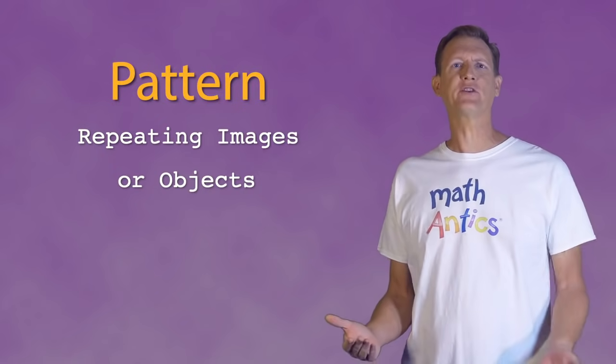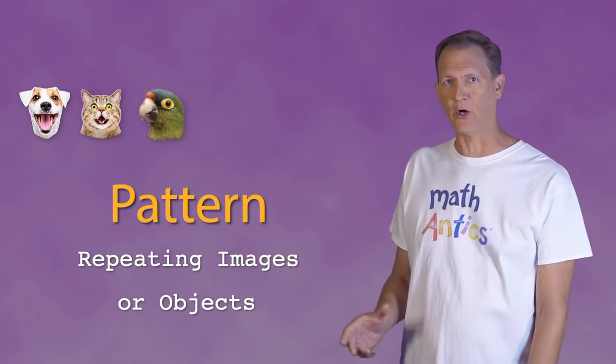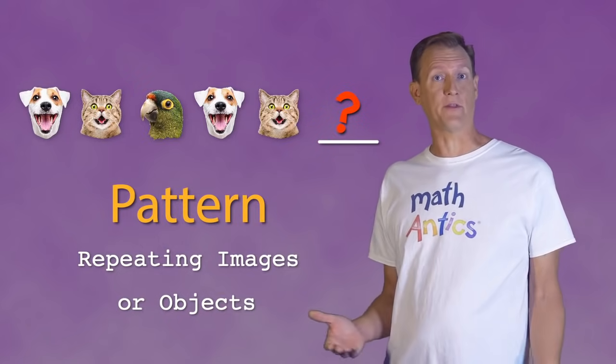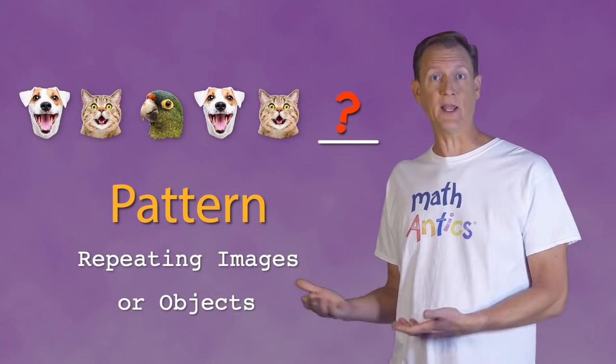Like, if I show you this pattern: dog, cat, bird, dog, cat, blank — what animal do you think should fill in the blank to complete the pattern? A bunny! Why would you think it was a bunny? Because I like bunnies. Well, it's not a bunny. It's a bird. See how the pattern repeats? Dog, cat, bird. Dog, cat, bird.